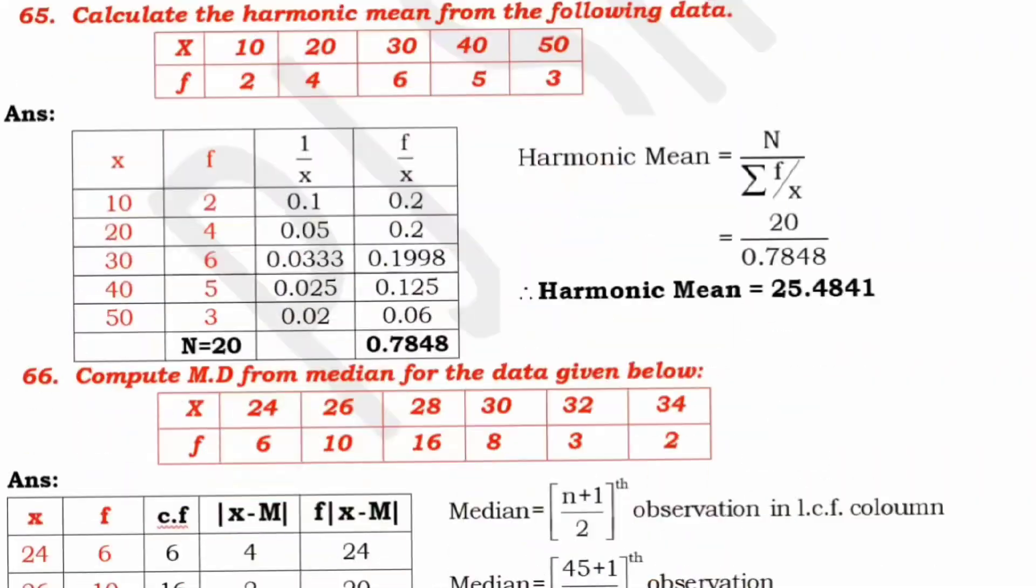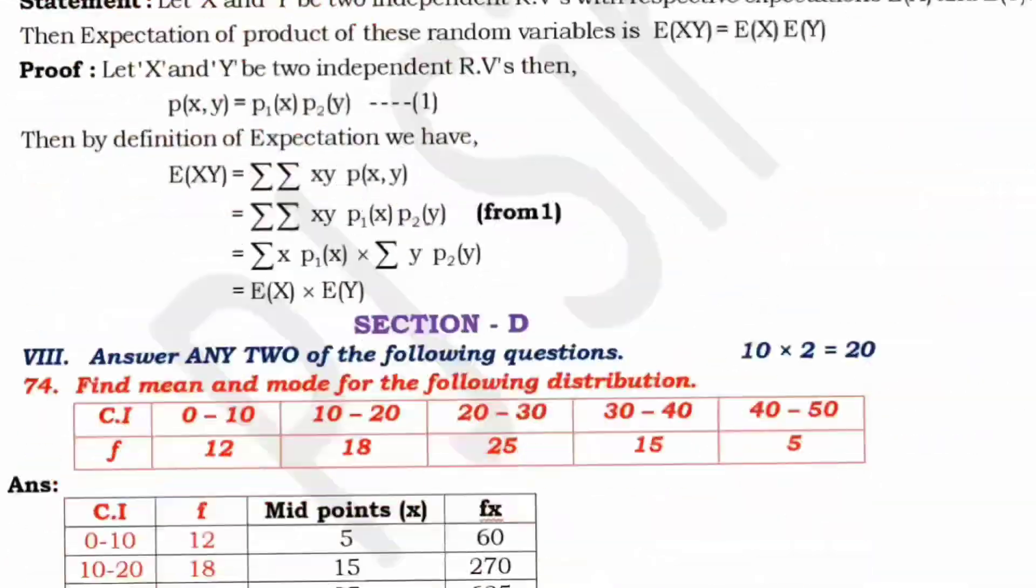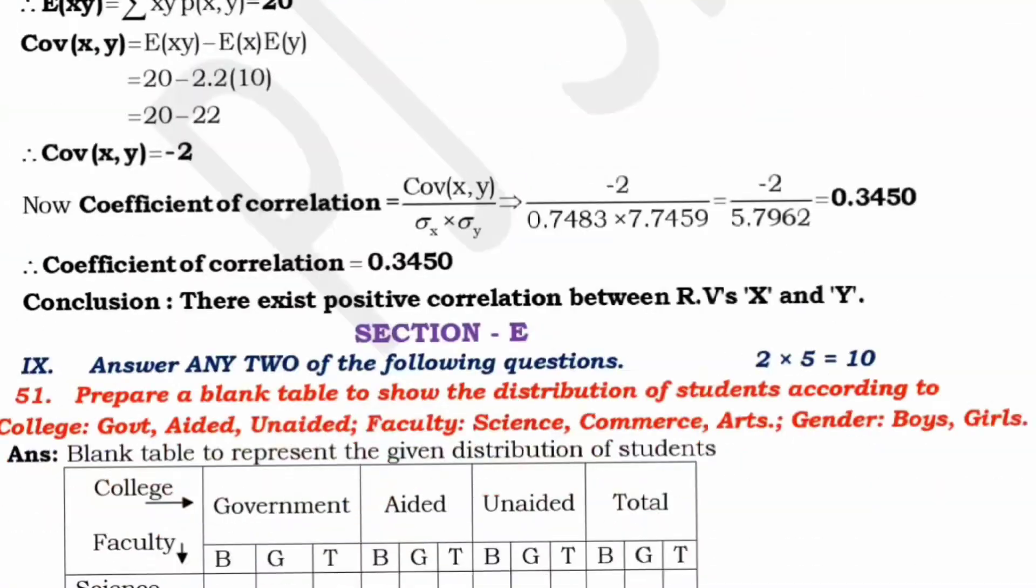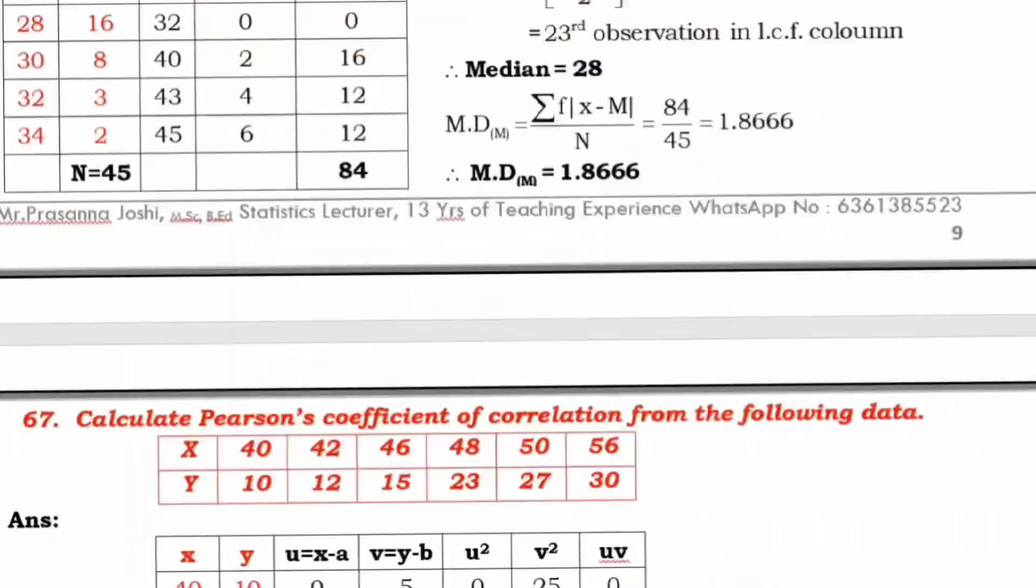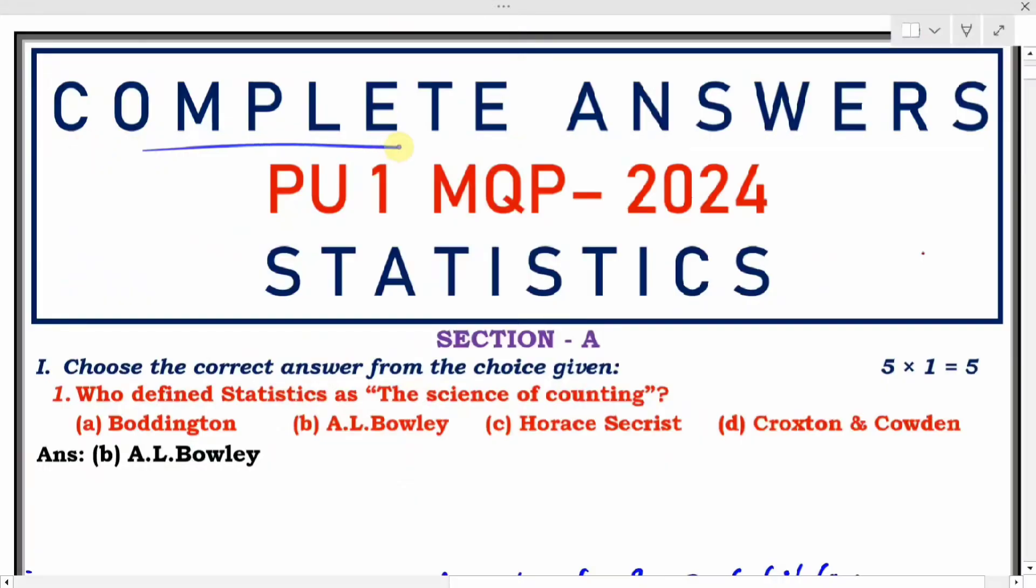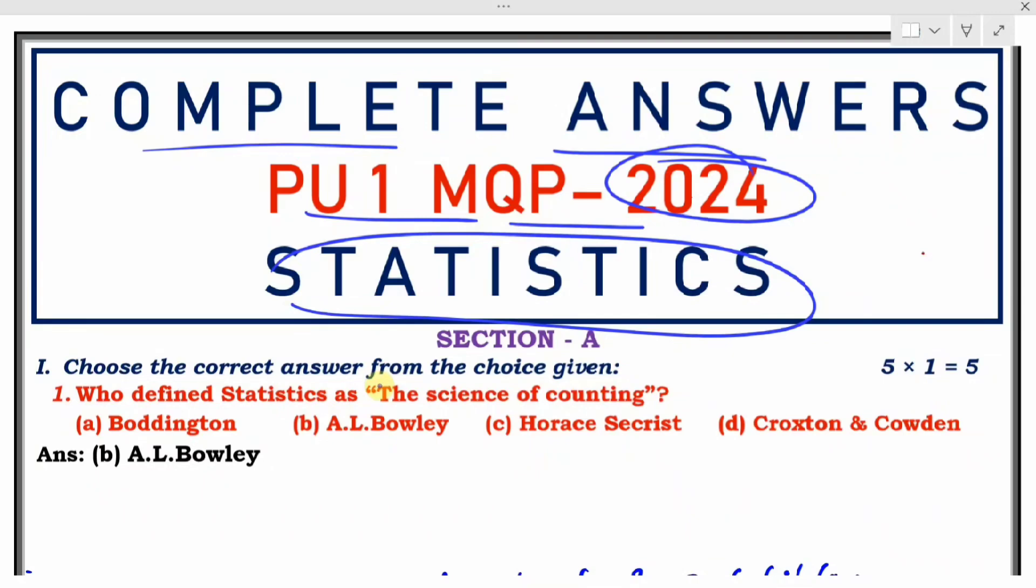Hello everyone, this is the complete answer for First PUC Model Question Paper 2024 for Statistics. Under Section E, choose the correct answers from the choices given - these are multiple choice questions (MCQs).